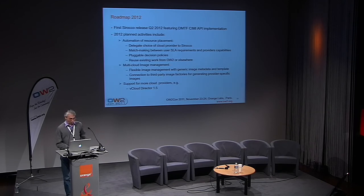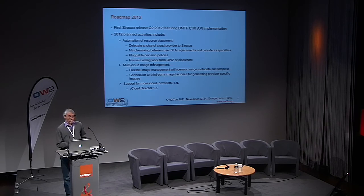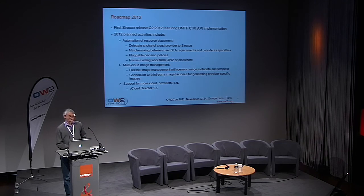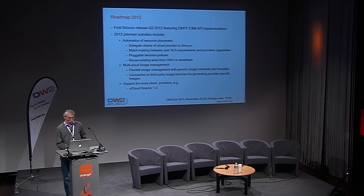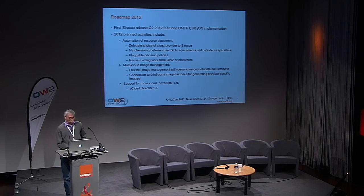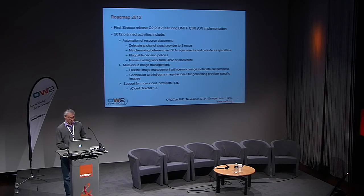The second axis of work is multi-cloud image management: flexible image management that hides the heterogeneity of various image formats across cloud providers. We will rely on third-party image factories, such as ShareSoft or equivalent, to generate cloud provider-specific images based on generic metadata. The last axis includes work on more cloud provider support, such as VMware vCloud.